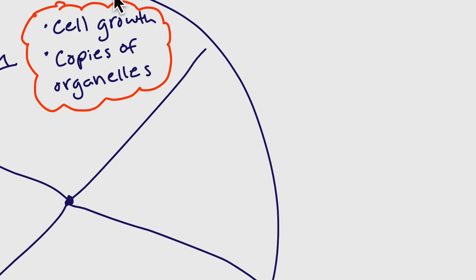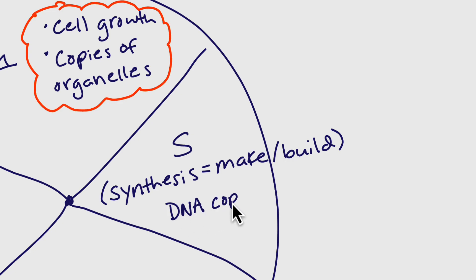If the cell gets through G1 and the conditions are right, it will go into what we call S phase. S stands for synthesis, which is referring to making or building. To synthesize something means to make or build, and that's referring in this case to building new DNA.